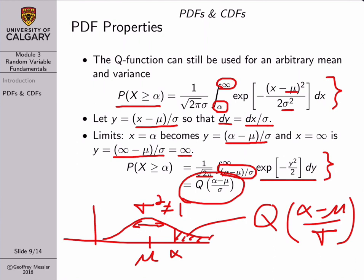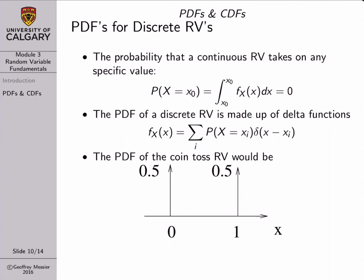We justified the need for a probability density function using continuous random variables as our argument — there are so many possible outcomes for a continuous random variable that we can't assign individual probability values to each outcome. That suggests we don't really need to use PDFs for discrete random variables, but in fact that's not true. We do actually define PDFs for discrete random variables, but we have to do it in a slightly special way.